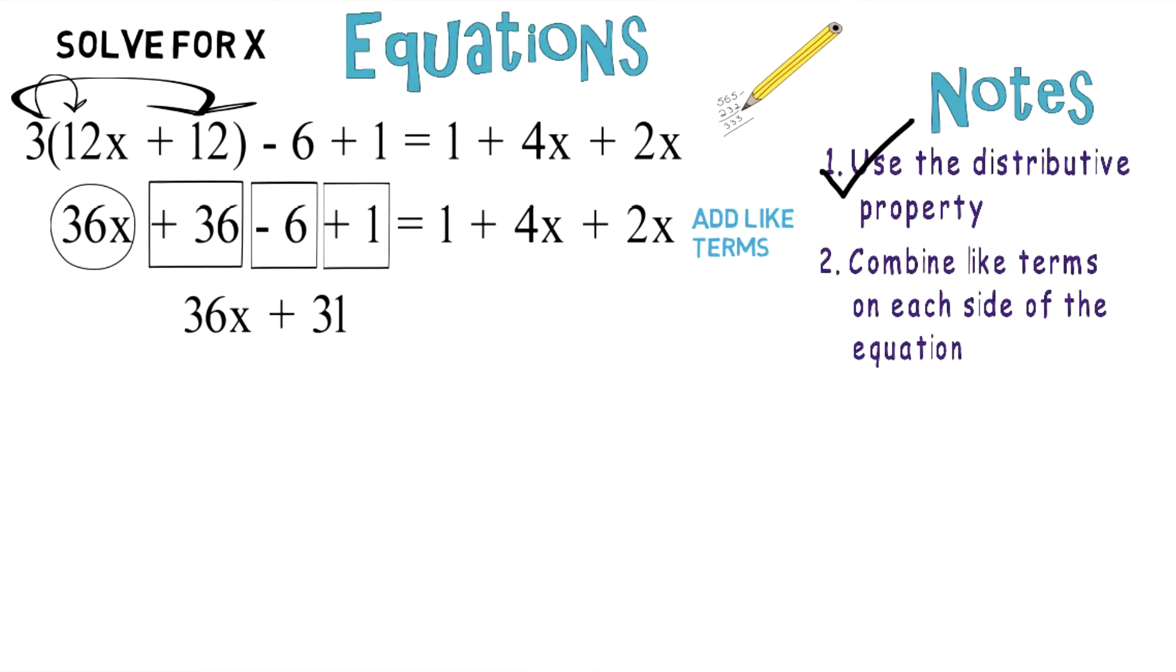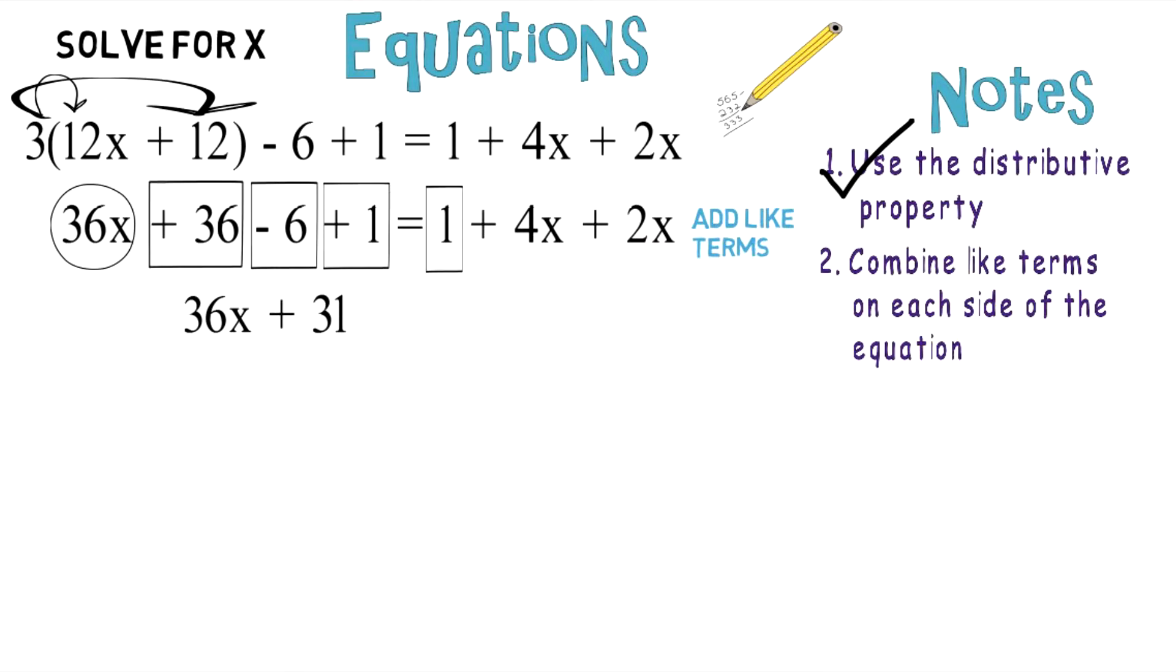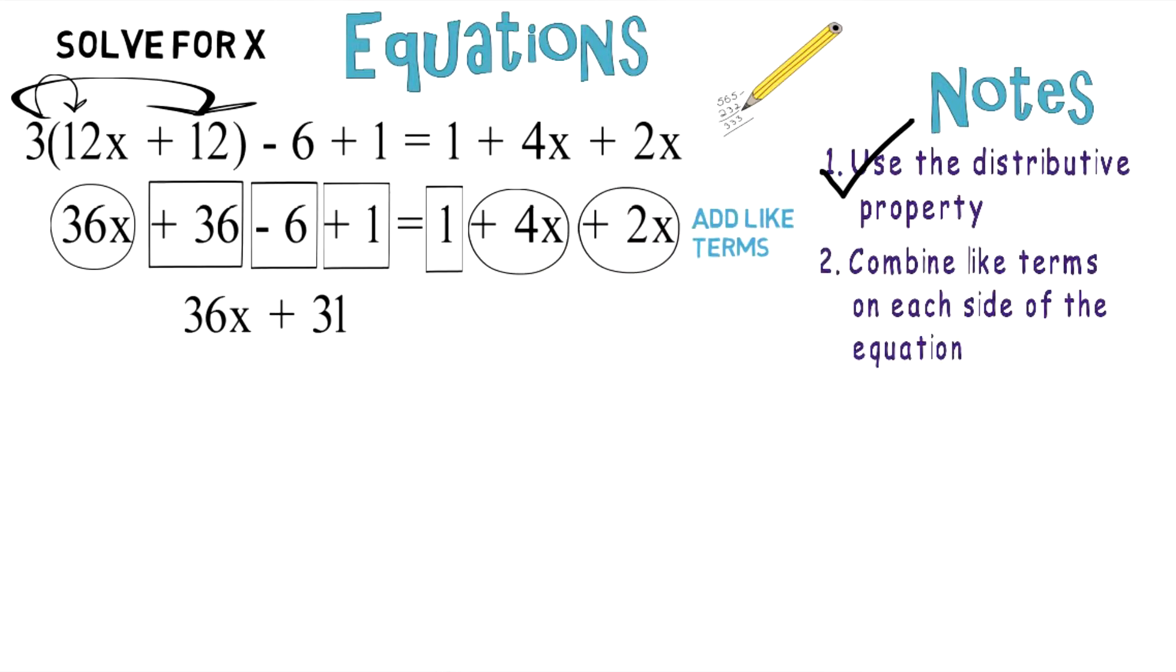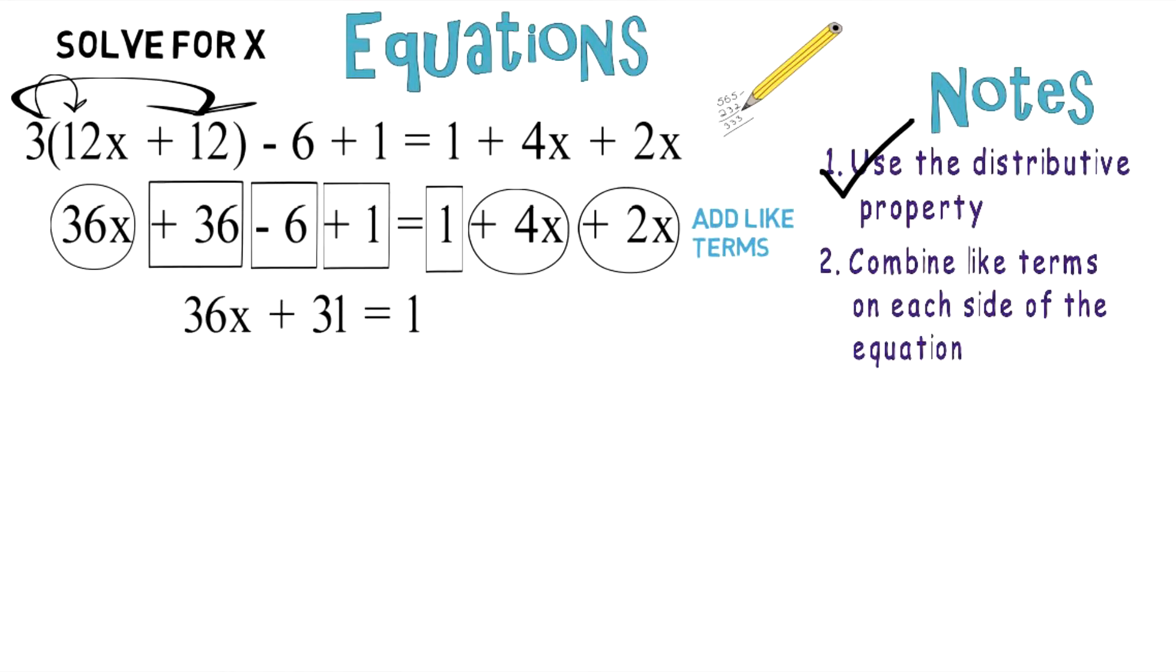Now, on the other side of the equation, you have 1 + 4x + 2x. If you combine those like terms, you wind up getting 1 + 6x.